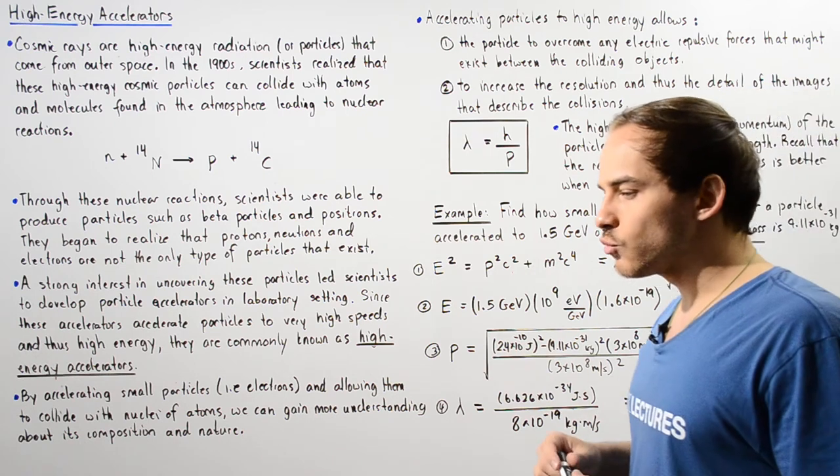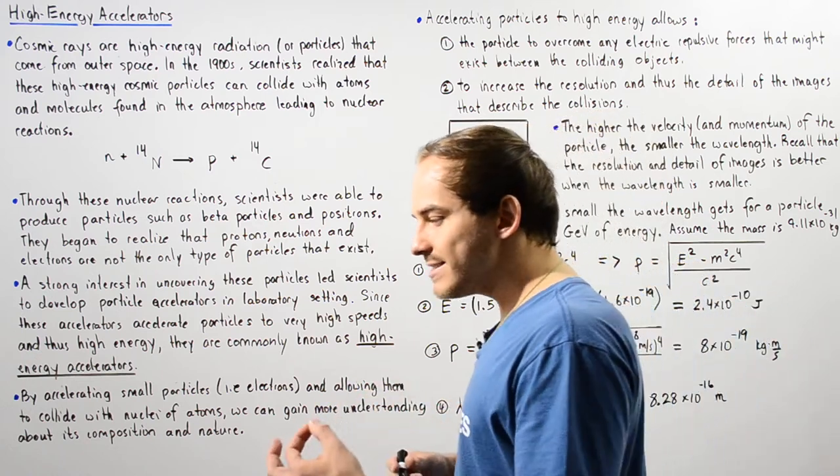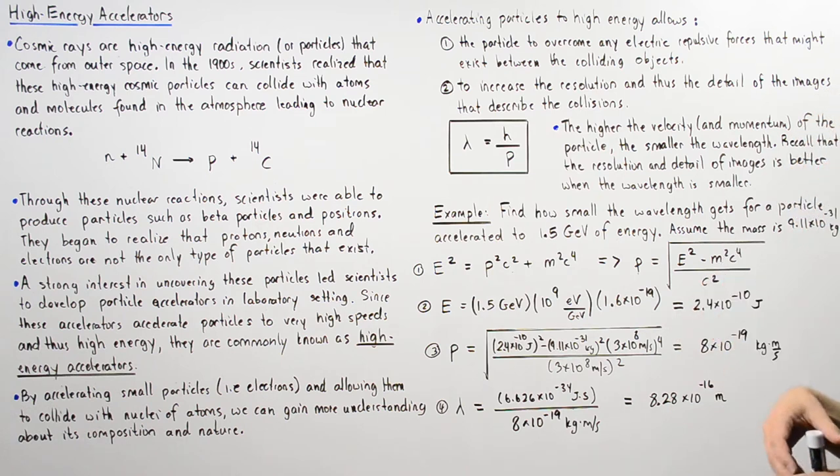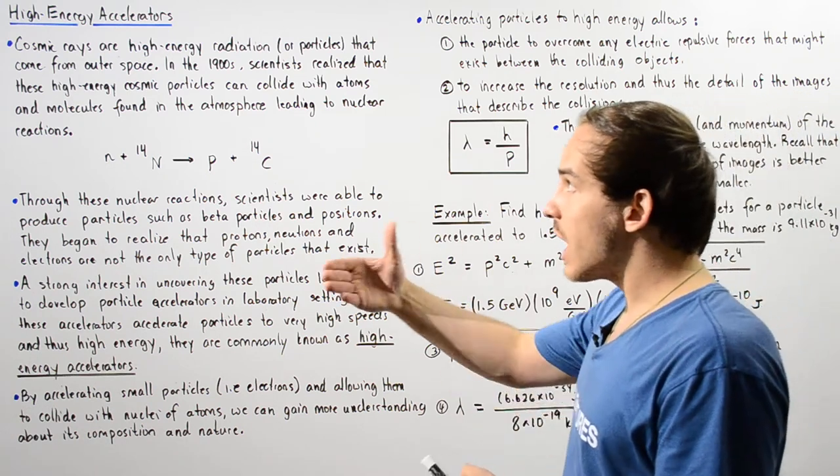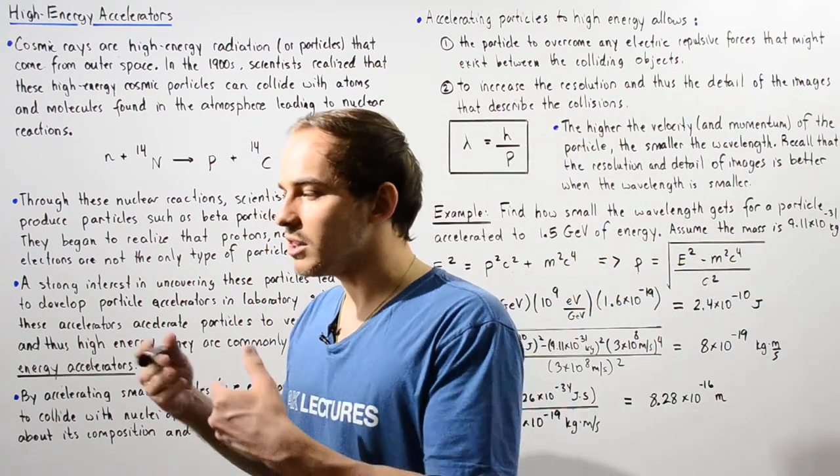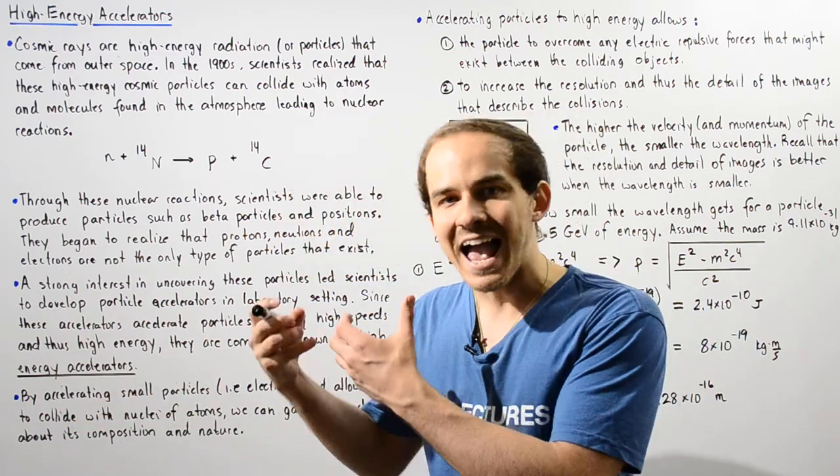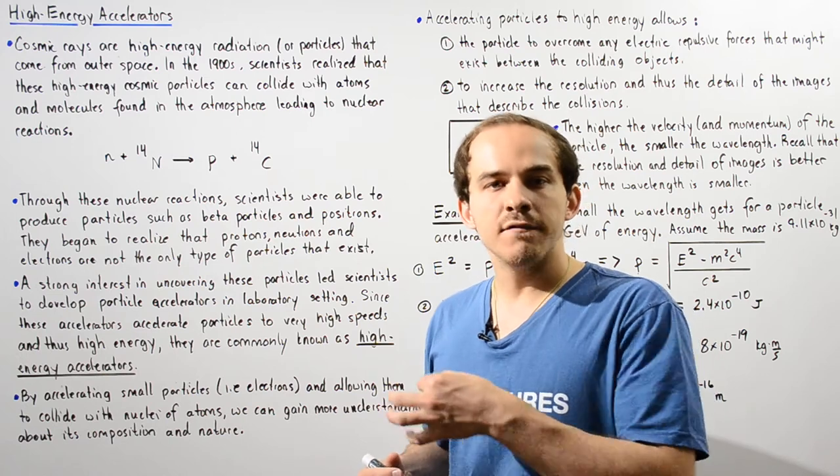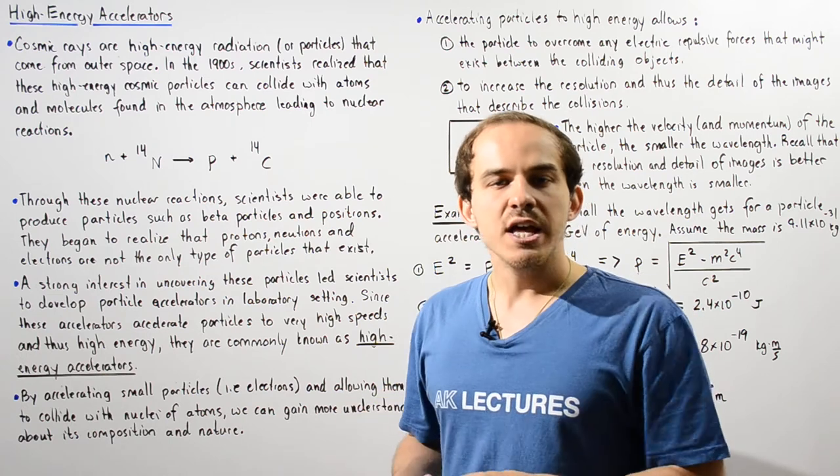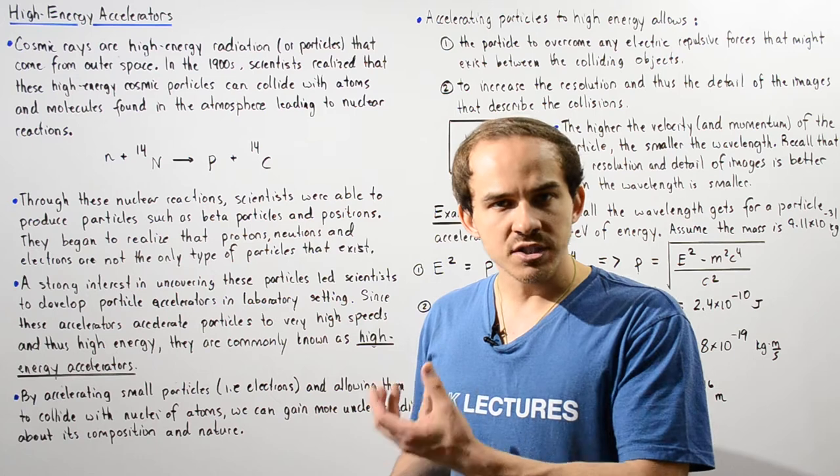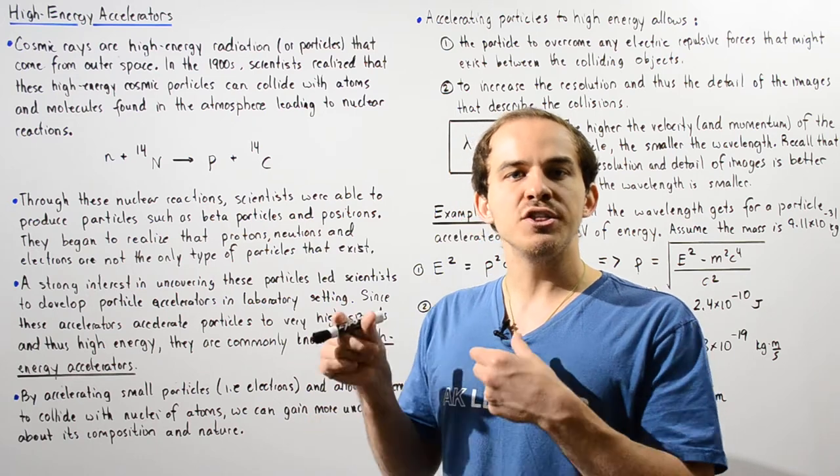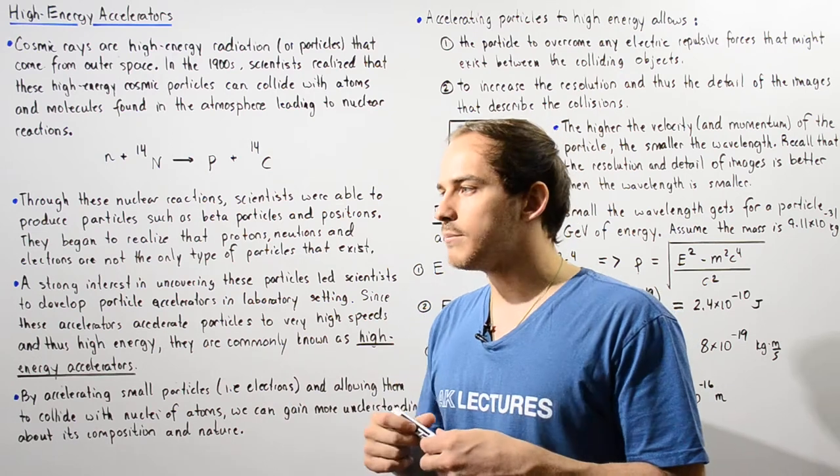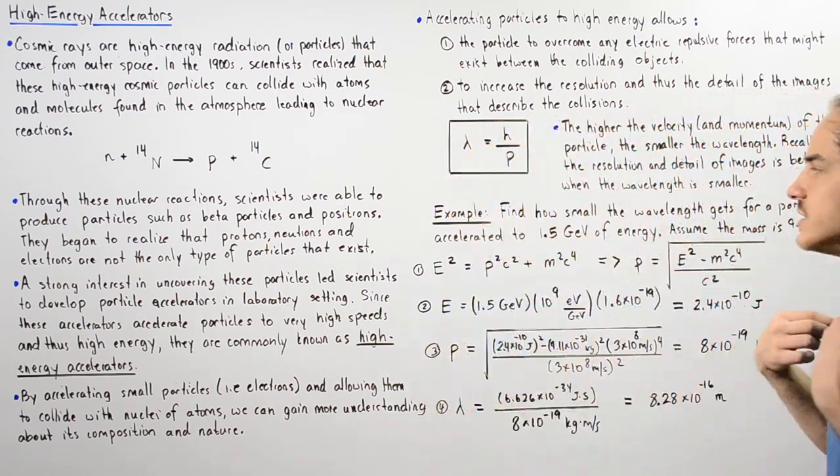Accelerating particles can basically allow us to do two very important things. Firstly, these high-energy accelerators allow us to accelerate particles to very high energies, and that means the particles have enough energy to overcome the electrostatic repulsive forces that might exist between the two colliding objects, and that allows those two objects to actually combine during collision.